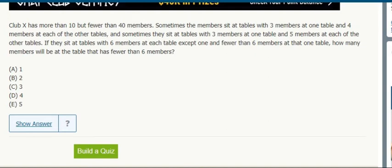So this is really a remainder problem that's hidden as kind of a word problem or like a real-life problem. We set a table with three members at one table and four at each of the other tables, so it's like some multiple of four plus three, because it's four at a bunch of them and three at the remaining one.